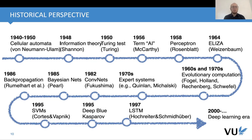Then in 1985, Judea Pearl proposed Bayesian nets, laying down the foundations of probabilistic modeling for more complex problems. This showed that we should look at networks and treat each node as a random variable. Then in the seminal paper by Rumelhart, including Geoffrey Hinton, backpropagation was proposed — or more formally written down and applied explicitly to neural networks.